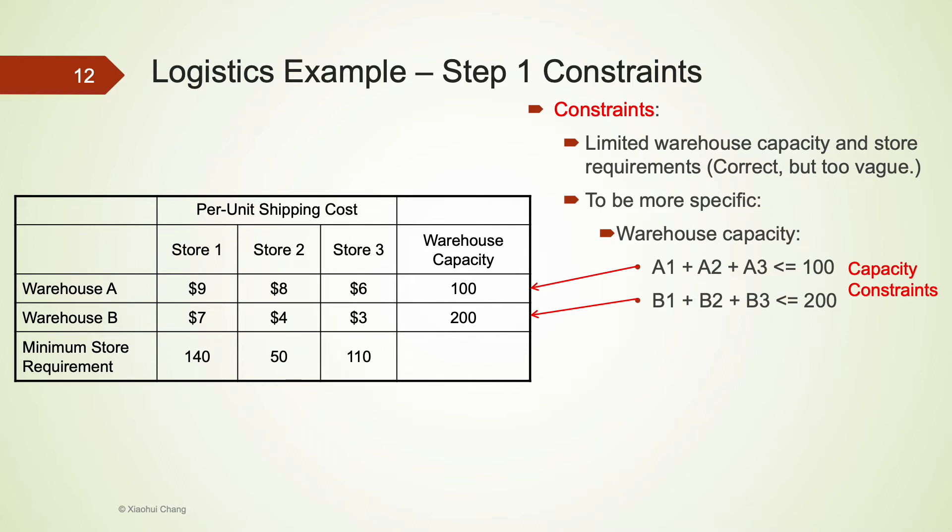Consider the warehouse capacity first. Warehouse A has a capacity of 100, meaning that the total units stored in warehouse A before they are transported cannot be more than 100 units. The manager intends to ship A1 units from A to 1, and A2 units from A to 2, and A3 units from A to 3, which means that their total is going to be A1 plus A2 plus A3. And the total warehouse capacity is 100, so the sum should be less than or equal to 100.